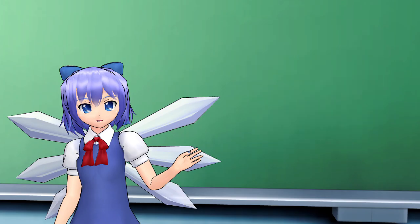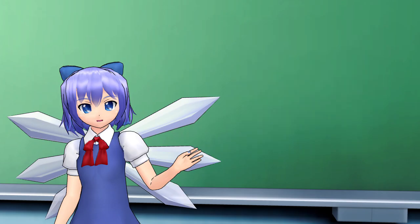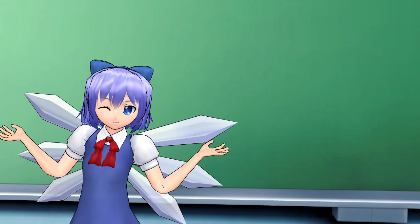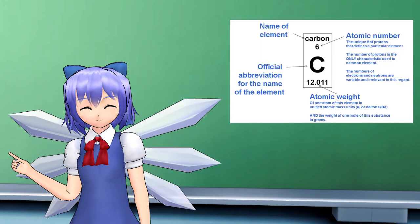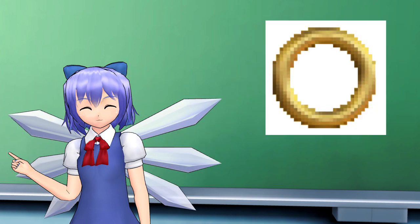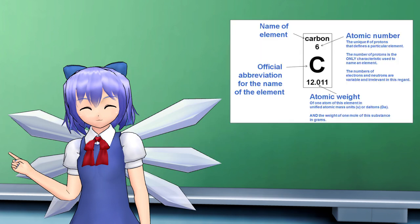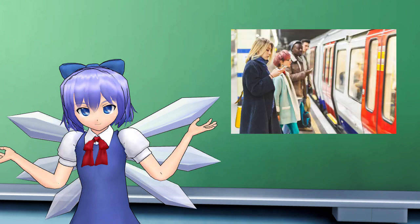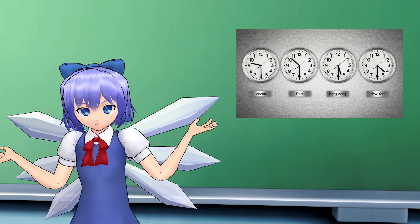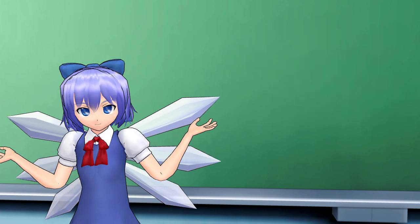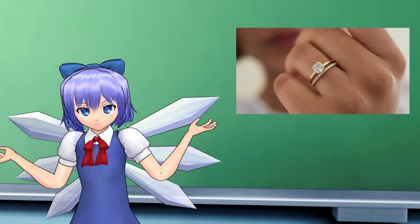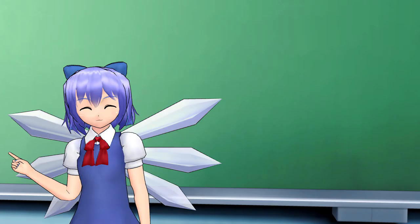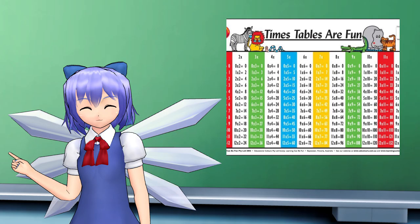A boolean ring is like a ring, but cooler. Every element in a boolean ring equals itself when you square it. And a ring is commutative when a times b equals b times a for every a and b in the ring, using the ring multiplication.